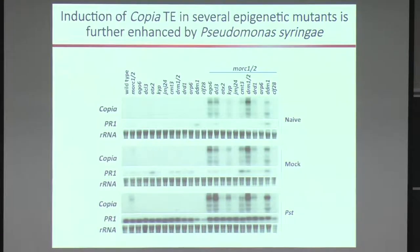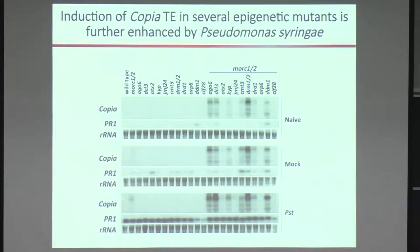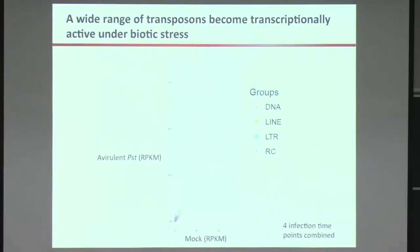I was explaining that transposable elements, contrary to most belief, are sometimes transcriptionally active, and this becomes much more apparent when combined with stress and some epigenetic mutations. You can clearly see one transposable element named copia becoming very active when pseudomonas is applied to well-known epigenetic mutants. Looking at the transcriptome of Arabidopsis, there are hundreds of transposable elements that are transcriptionally active even without stress, and with stress their transcription significantly increases.